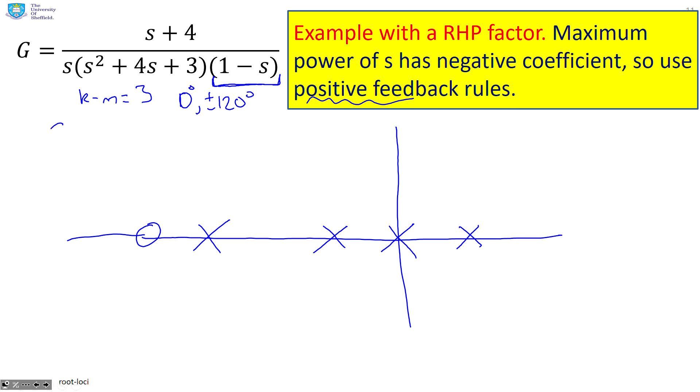What about the centroid? Well, the centroid is going to be minus four plus one plus four over three. So remember, sum of poles. So we add together all the pole positions minus the sum of zeros divided by k minus m. And so what you'll see is you get a third.